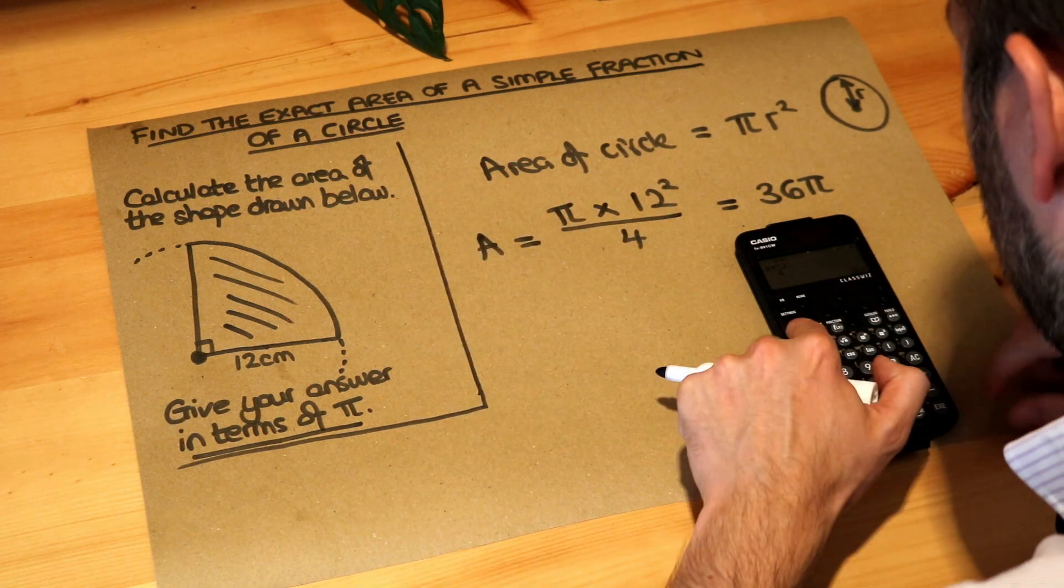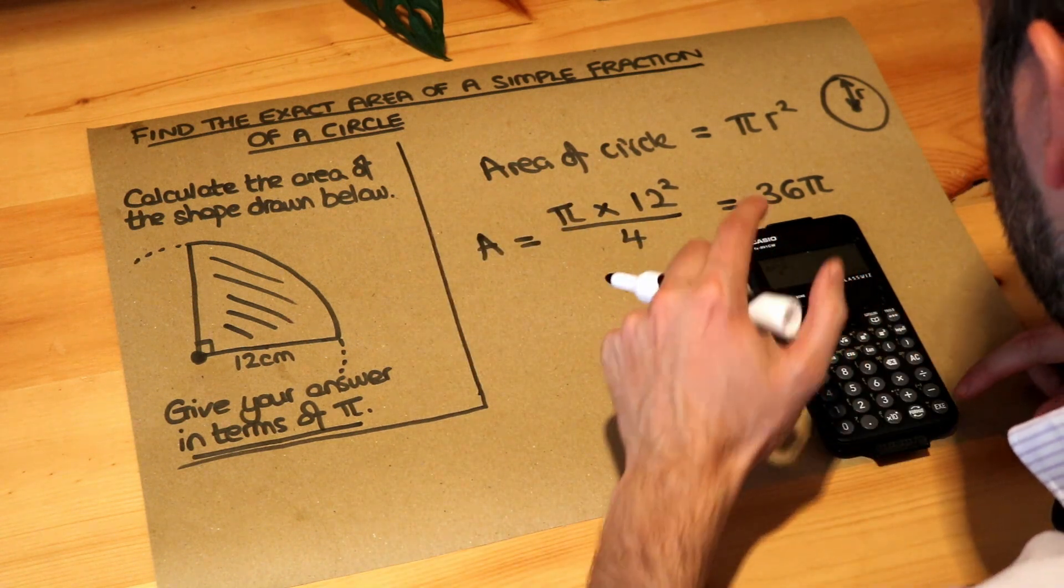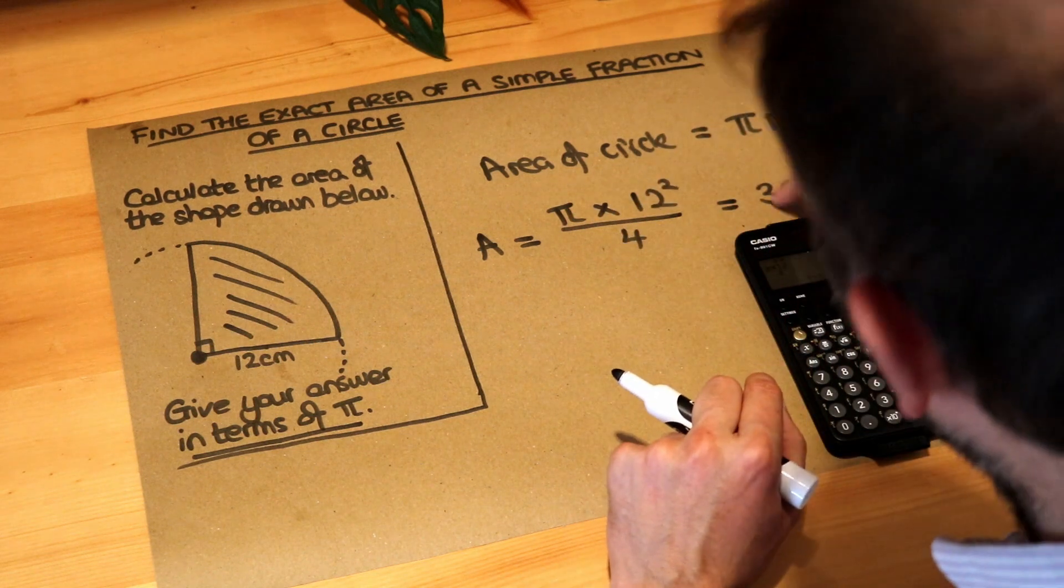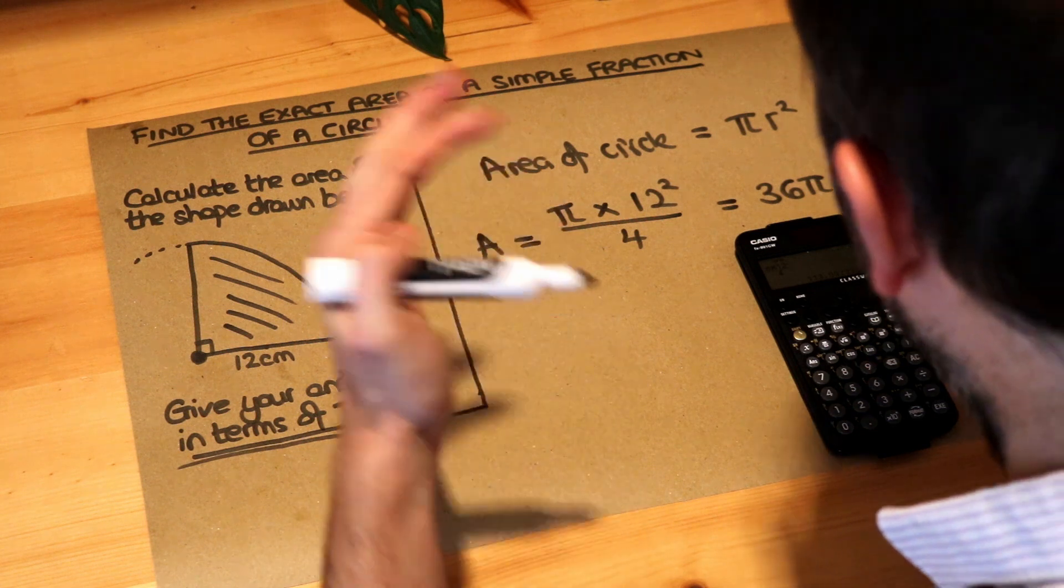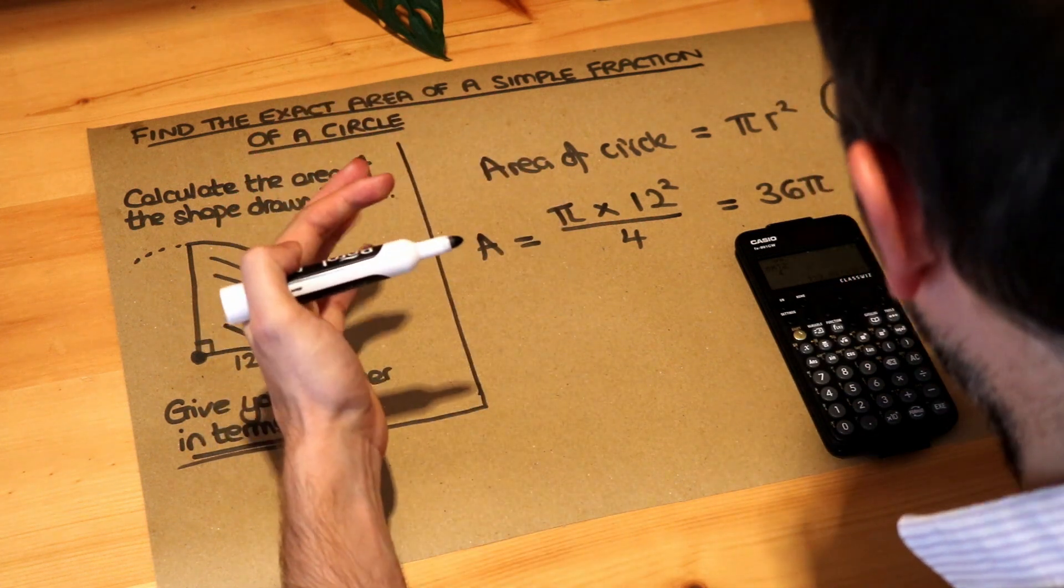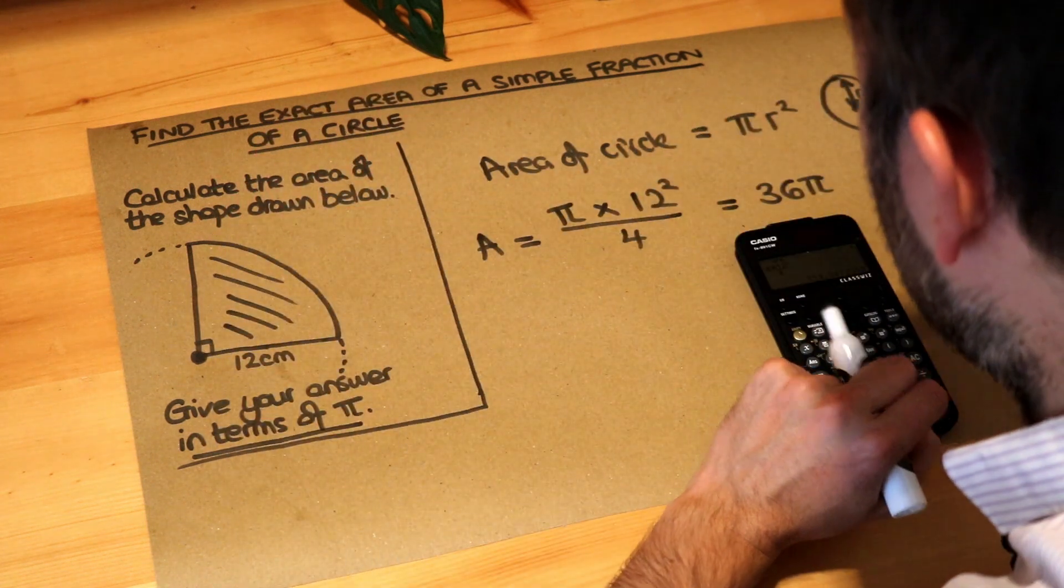In fact, if I converted the 36 pi to a decimal, I could do that, and it gives me 113.097, etc. That's what 36 lots of pi would be as a decimal. But we want to give an exact answer, and an exact answer will be one that keeps the pi in it.